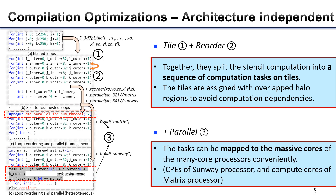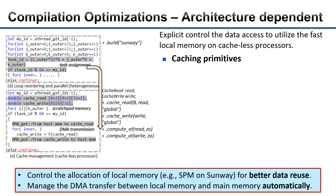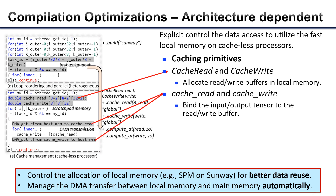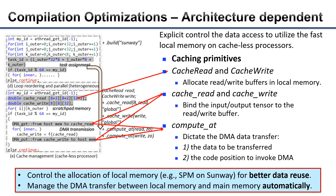The parallel primitive subsequently maps tasks on tiles to the massive cores of many-core processors. For Sunway, which adopts a cache-less architecture, data access requires explicit control to utilize local memory for data reuse. Specifically, cache-read and cache-write primitives allocate read and write buffers in local memory and bind the input and output tensors to the buffers. The compute-at primitive dictates the data transfer, which contains two parts: the data to be transferred and the code position to invoke DMA.